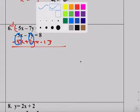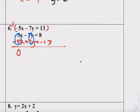So, 0 plus 0 is 0. 0 plus 0 is 0 equals 13 minus—that's negative 5. So, 0 is not equal to negative 5. Therefore, it's no solution.